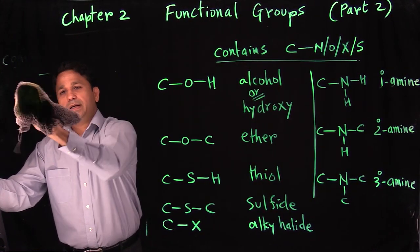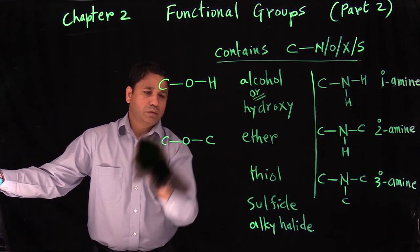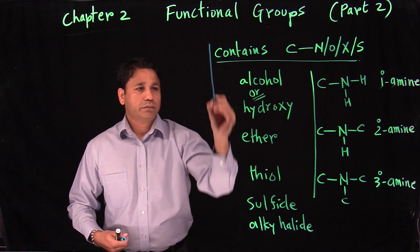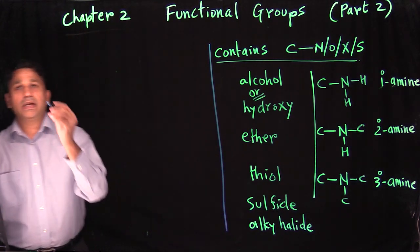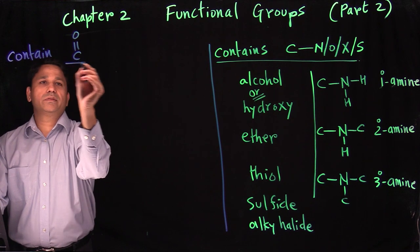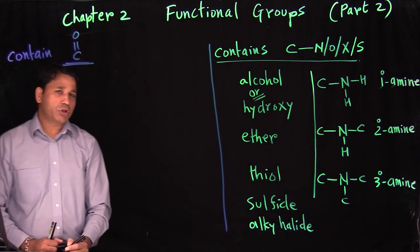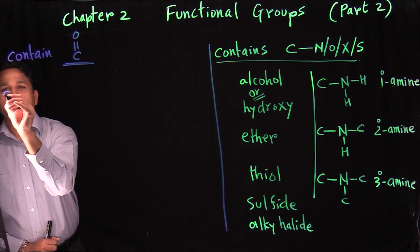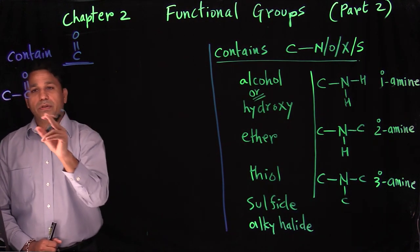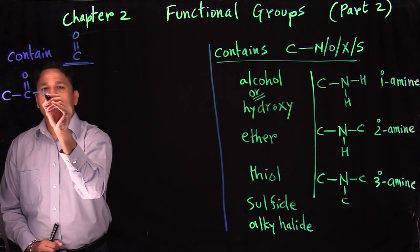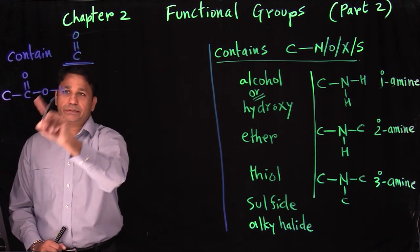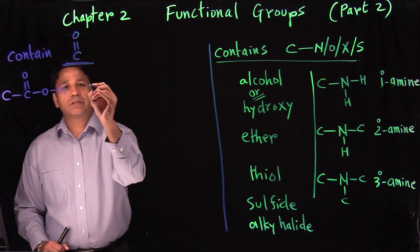The third category contains functional groups with a carbon-oxygen double bond. Let's see what different functional groups we can have. Starting with a carbon-oxygen double bond, we compare it similarly to the previous category. Here we have OH connected to a carbon-oxygen double bond, and this becomes a carboxylic acid.